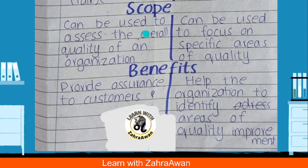External quality assurance is more objective and impartial — it is fair and good. Internal quality assurance is less objective and less impartial. In terms of scope, external quality assurance covers the whole organization's quality, while internal quality assurance covers specific areas. The benefit of external QA is that it provides accuracy to customers; internal QA helps the organization to identify areas for quality improvement.